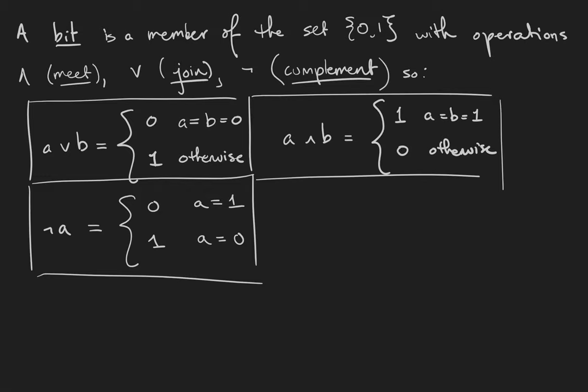So a bit is a member of the set with operations meet, join, and complement. You should actually recognize these operations. Join is defined to be 0 only if both of the bits involved are 0 and 1 otherwise.